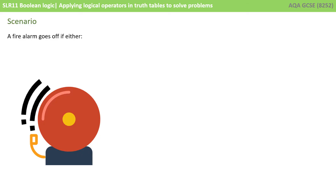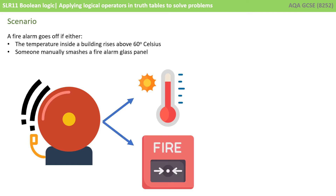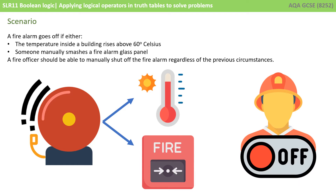In an exam you may be given a scenario and asked to write a logic diagram, a truth table, or possibly both. So with our scenario, we're going to say that a fire alarm goes off if either the temperature inside a building rises above 60 degrees Celsius, or someone manually smashes a fire alarm glass panel. We also want the situation where a fire officer should be able to manually shut off the fire alarm regardless of those previous two circumstances being true.